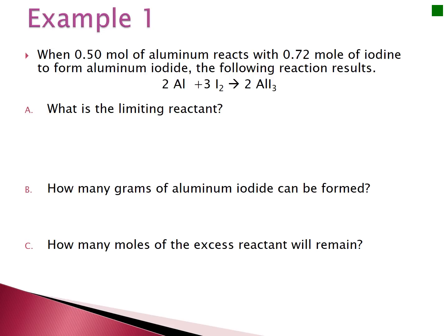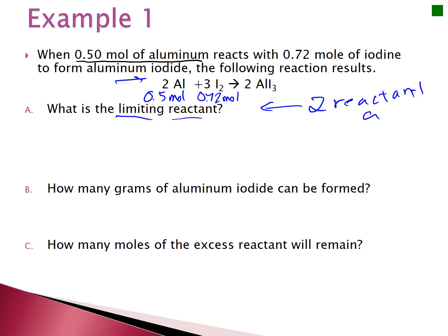You're going to do a problem, and it's easy to do these problems, but make sure you understand how to do it. On the test, this is where students lose a lot of points because they don't go to the right thing. You need to write down what you know underneath the reaction to identify it as a limiting reactant problem. When I have 0.5 moles of aluminum reacting with 0.72 moles of iodine, giving two reactant amounts signals a limiting reactant problem.